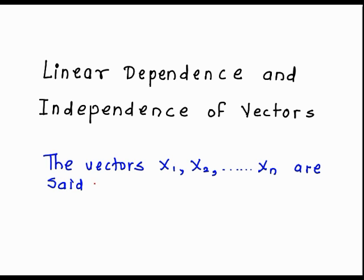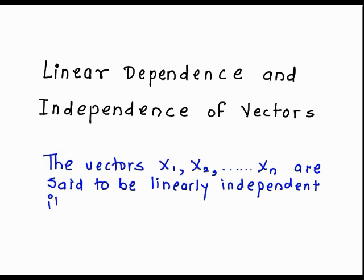Vectors x1, x2, x3, up to xn are said to be linearly independent if, first of all, we write all these vectors in the form of a linear combination. Suppose some constants k1 into vector x1, plus k2 into vector x2, and so on, the last combination being kn into xn equal to 0.